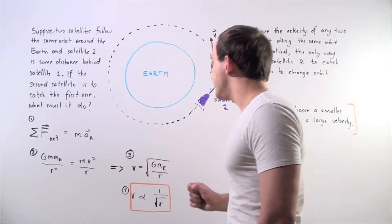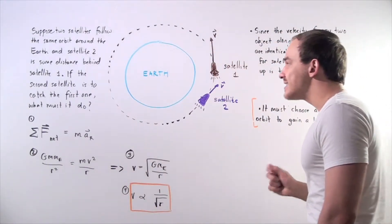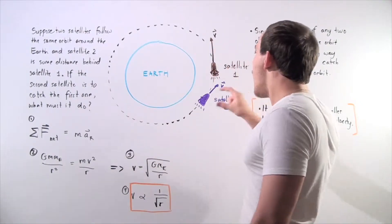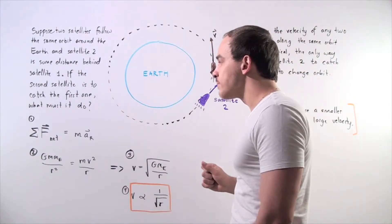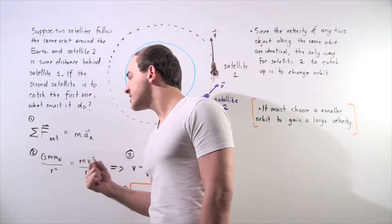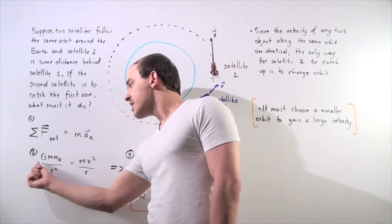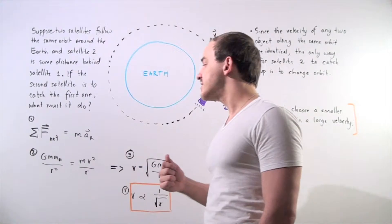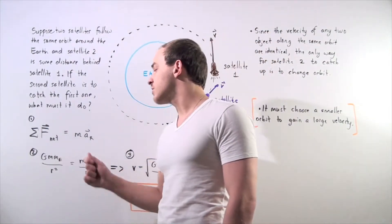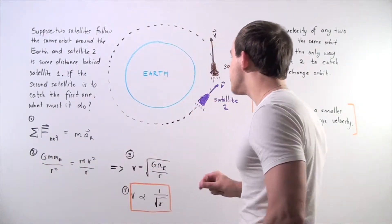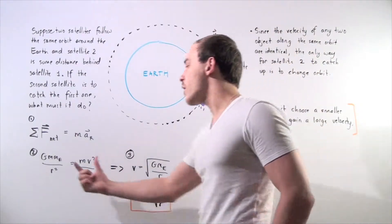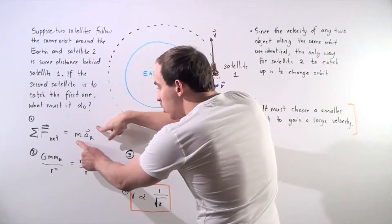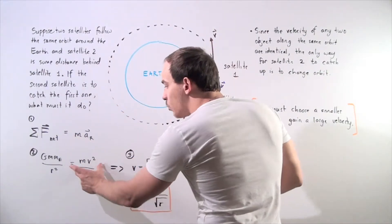The only force acting on either satellite is the gravitational force of the earth pulling on them. The gravitational force is given by: G times the mass of the satellite times the mass of the earth, divided by the distance between centers squared. This equals mv²/r.